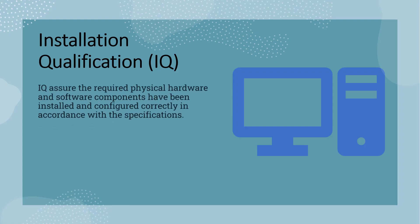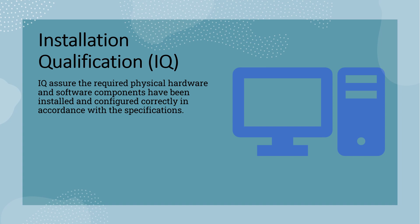So in this slide, we will discuss about the installation qualification for computerized system. Installation qualification actually assures the required physical hardware and software components have been installed and configured correctly in accordance with the specifications. For example, when you are having any instrument or equipment, that instrument or equipment will connect to some software to operate that instrument or equipment.